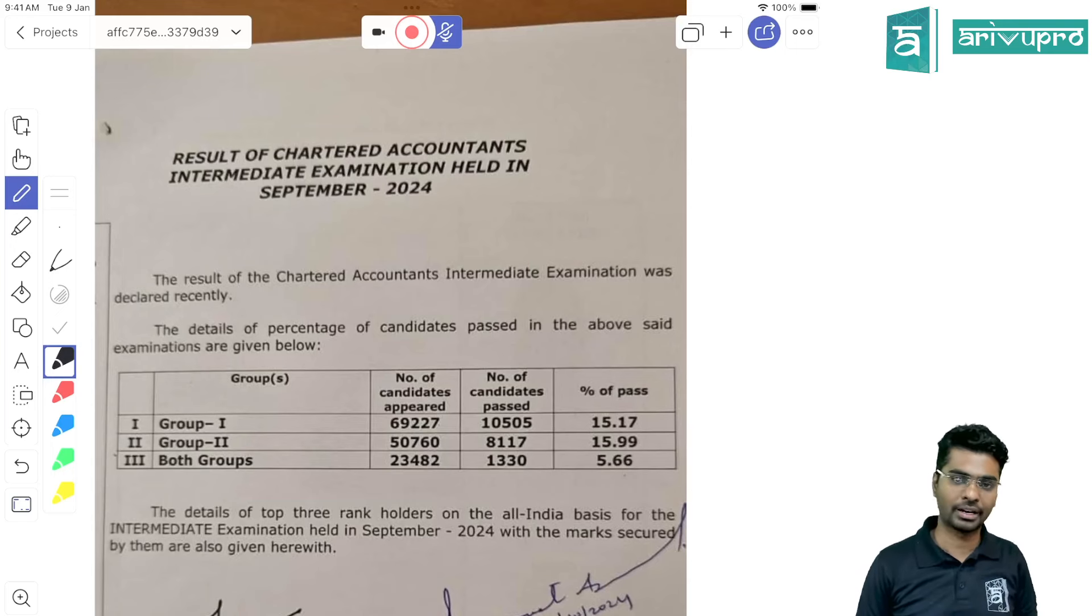For students who have cleared both modules and are looking for articleship, I have a video on how to choose between a big four, mid-size firm, or sole proprietary. You can check it out.